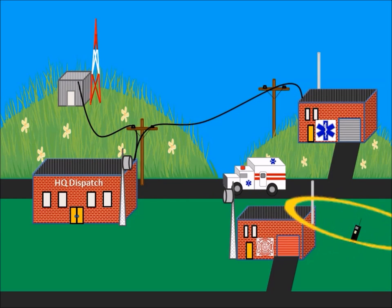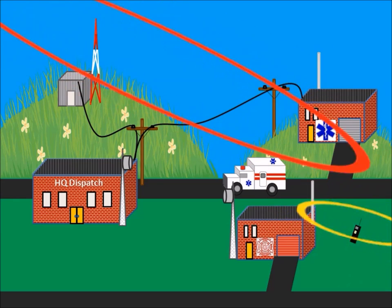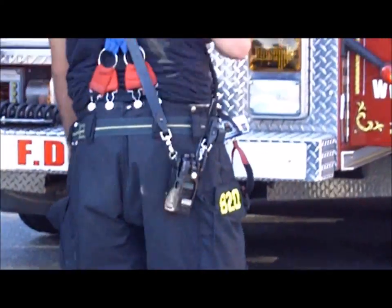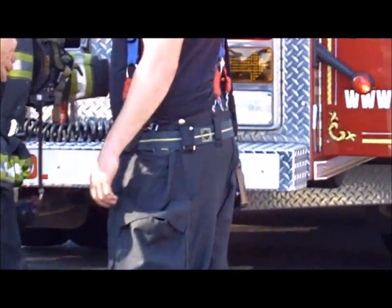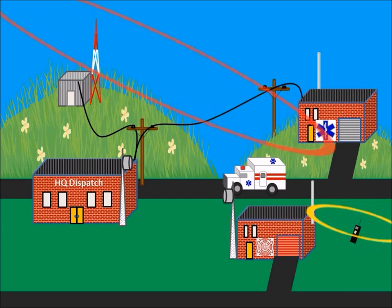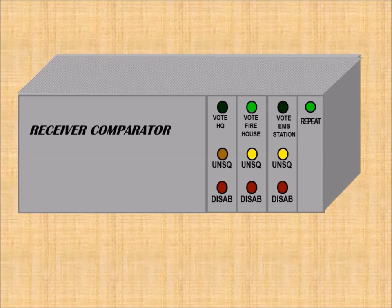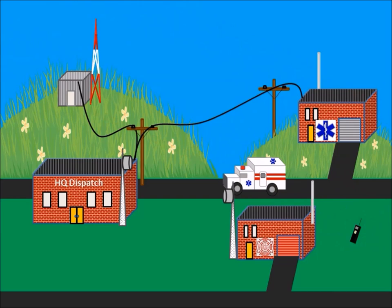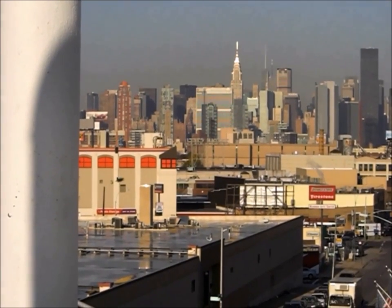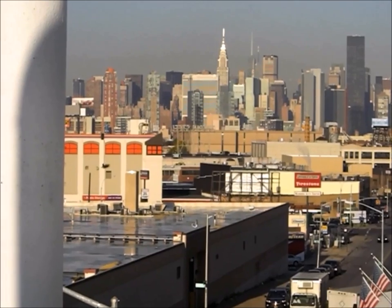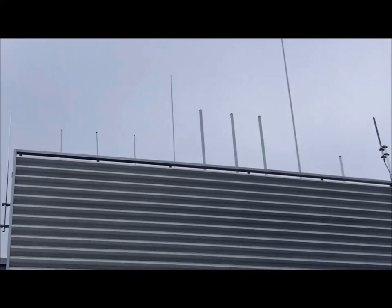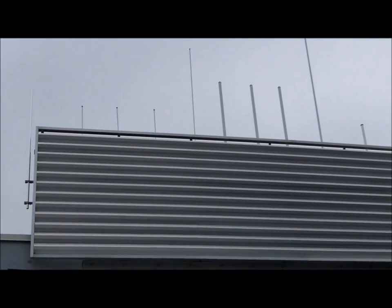Comparators can be configured to provide repeater operation also. The weak portable transmitted signal received by even a single voting receiver can be retransmitted through the comparator to the base station out to the other subscriber units in the field. The number of receivers hit depends on the location and transmit power of the subscriber and the location of the receiver antenna.